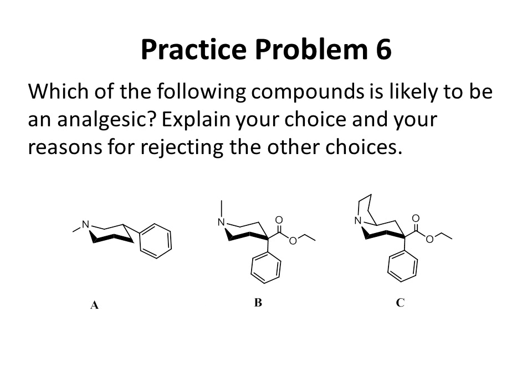Practice Problem 6: Which of the following compounds is likely to be an analgesic? Explain your choice and your reasons for rejecting the other choices. Remember that the nitrogen's lone pair must be axial and in a six-sided ring, and that axial lone pair must be anti — diagonally across — from a benzene ring. Pause the video to work on the practice problem.